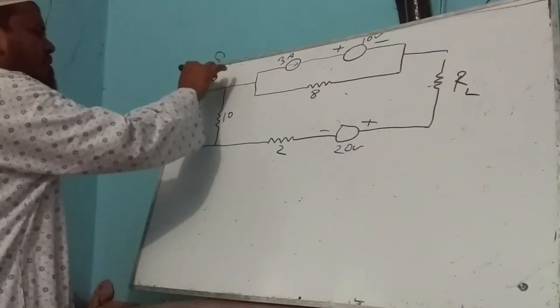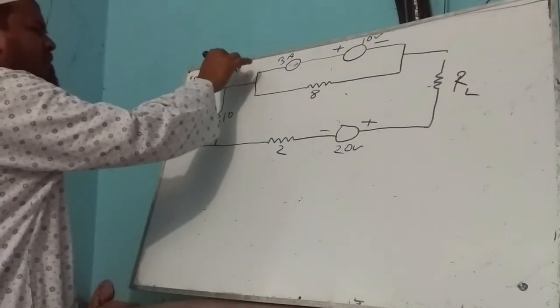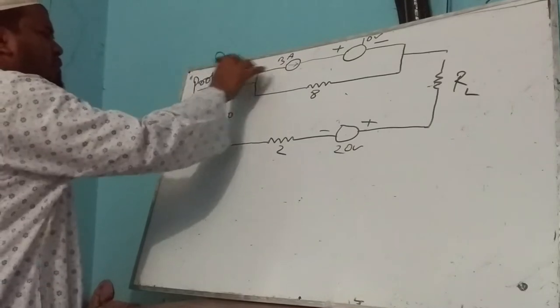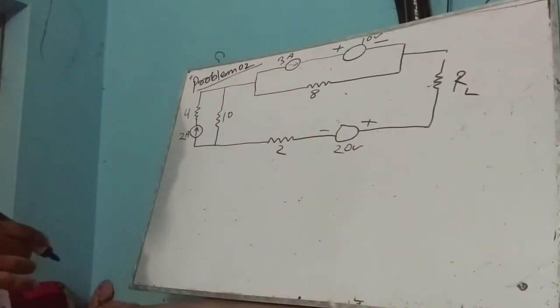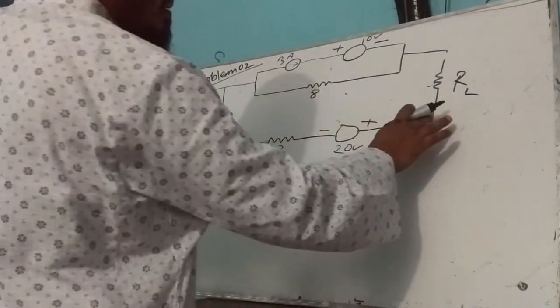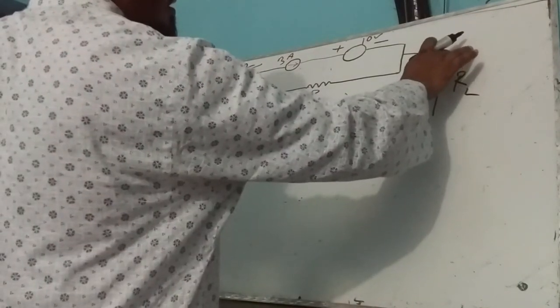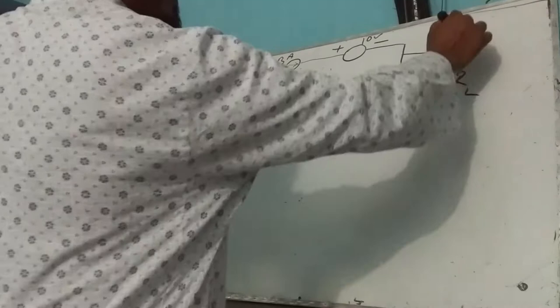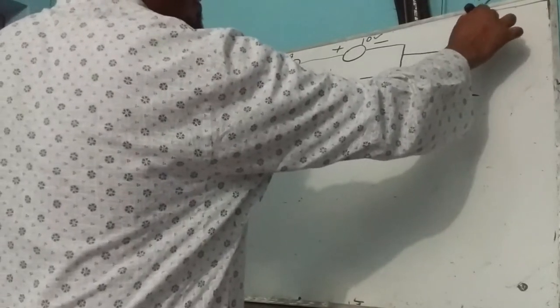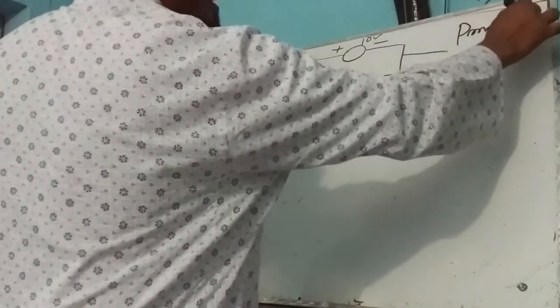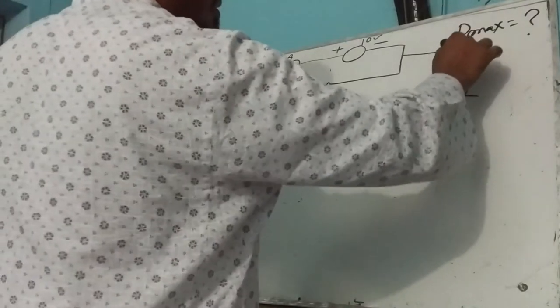Problem 2: maximum power transfer is 0. Problem 2, we will see what is RL. RL is maximum power. P max is equal to what? What is R at source power?